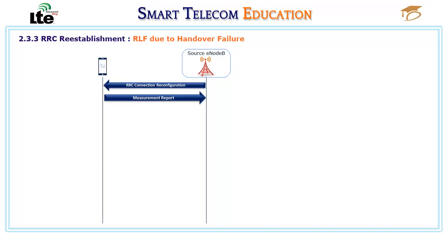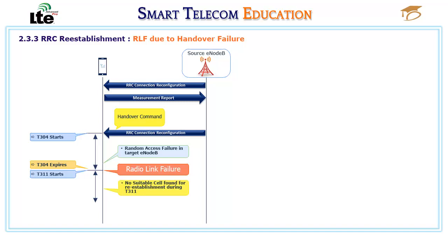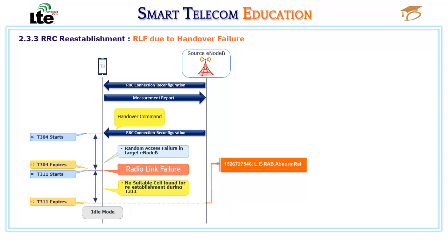To summarize: when the UE receives a handover command from the source cell, the timer T304 starts and the UE performs a random access procedure to the target eNodeB. If the PRACH fails and the timer T304 expires, the UE initiates an RRC reestablishment procedure and starts the T311 timer. During T311, the UE reselects a cell for reestablishment. If no suitable cell is found and T311 expires, the UE goes back to idle mode. After expiration of T304 plus T311, the eNodeB releases the ERAB and increments by 1 the LTE ERAB abnormal release cause: handover failure.